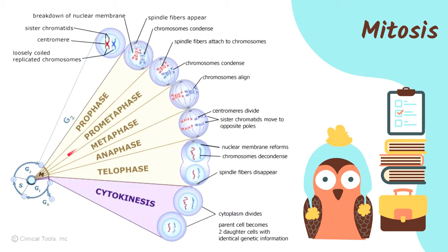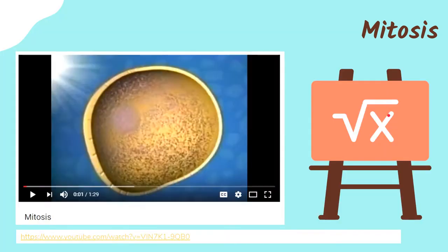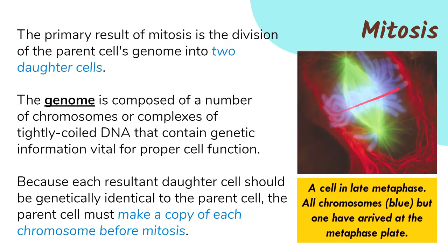The next stage is metaphase, but between prophase and metaphase there is a sub-stage called prometaphase — meaning 'before metaphase.' Here the spindle fibers attach to each of the chromosomes. Then during metaphase — 'meta' meaning middle — all the chromosomes align in the middle. Metaphase is one of the most easily recognizable stages of mitosis because you can see all the chromosomes aligned at the center.